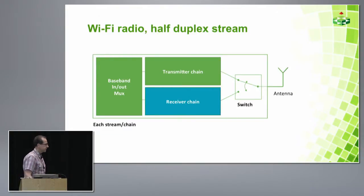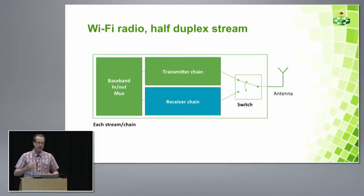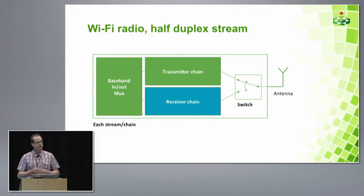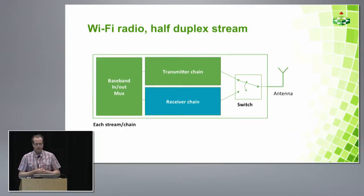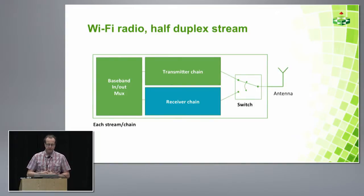Wi-Fi radio is half-duplex. There is a transmitter chain and a receiver chain. The receiver is on unless something is being transmitted — when transmitting, a switch activates the transmitter. Transmit and receive take turns, and there is a physical semiconductor switch switching between the transmitters and receivers.